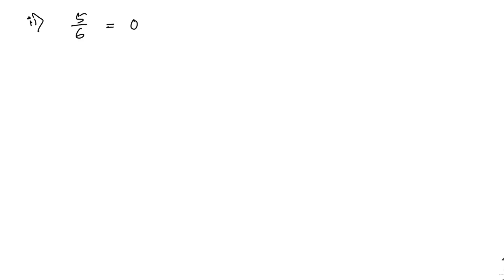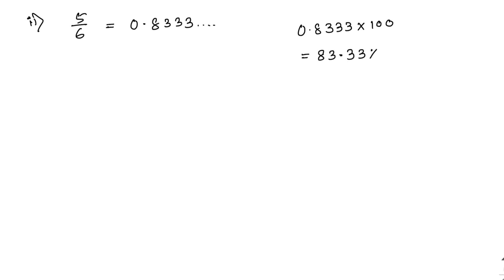5 by 6 equals 0.8333. Multiply by 100: 0.8333 into 100 equals 83.33 percent.